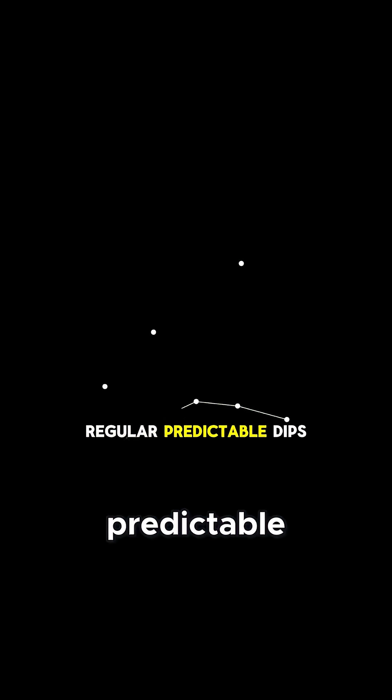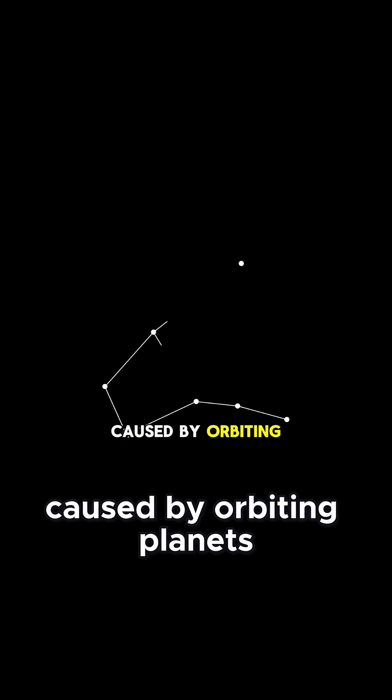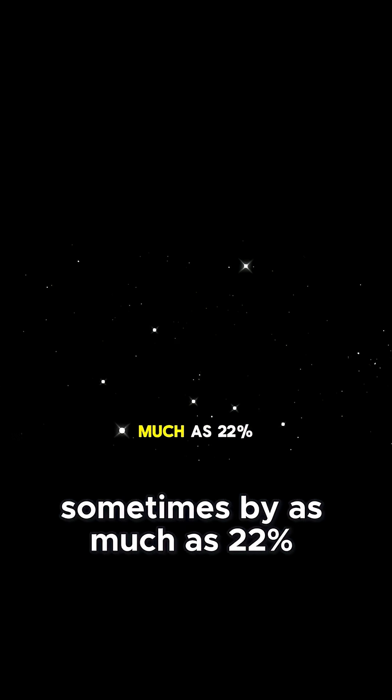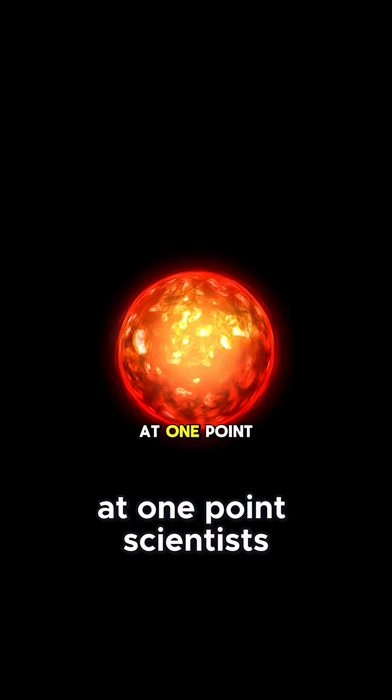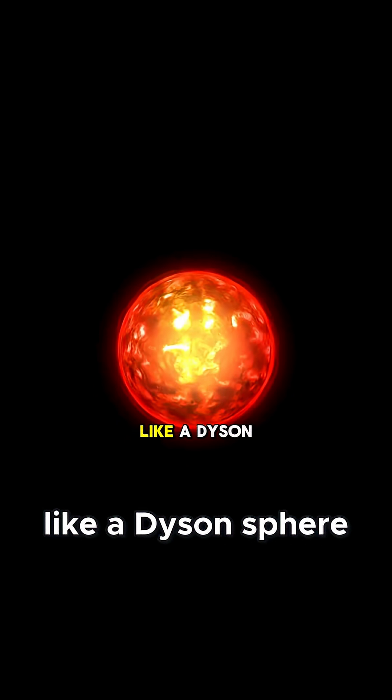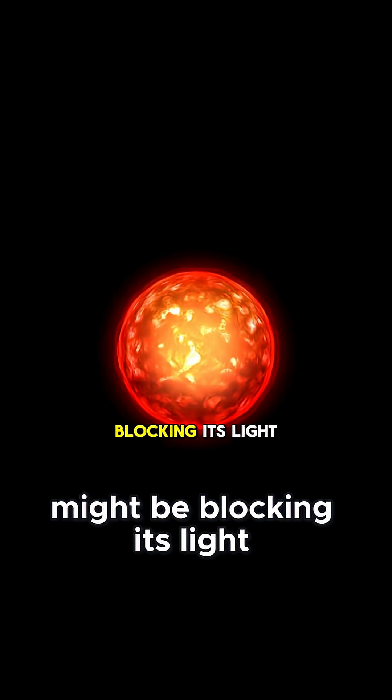Most stars have regular, predictable dips in brightness caused by orbiting planets, but Tabby's star dims erratically, sometimes by as much as 22%. At one point, scientists even floated the idea that an alien megastructure, like a Dyson sphere, might be blocking its light.